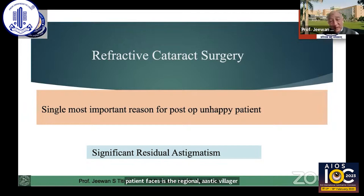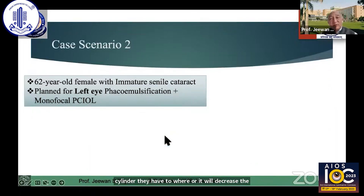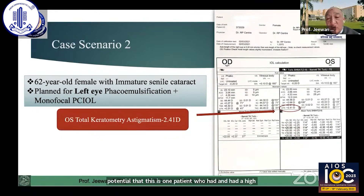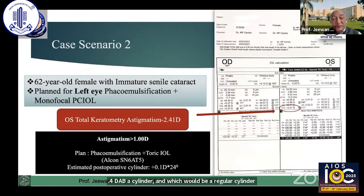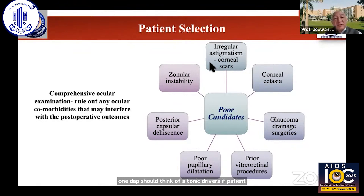The patient may not be very happy with the amount of cylinder they have to wear, or it will decrease the outcome of a patient who underwent surgery, because astigmatism per se will decrease the visual potential. This is one patient who had cataract and had a high cylinder. You can see the biometry giving us more than 2.4 diopter cylinder, which would be a regular cylinder, can be corrected by Toric IOLs. So any cylinder which is more than one diopter should prompt consideration of a Toric IOL if the patient has some cataract surgery.